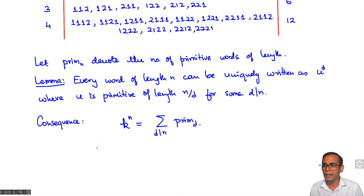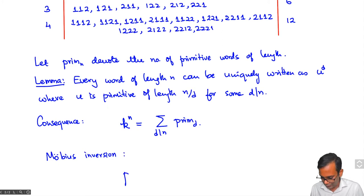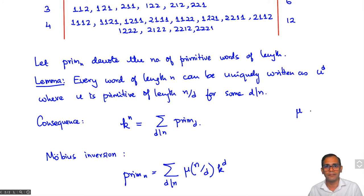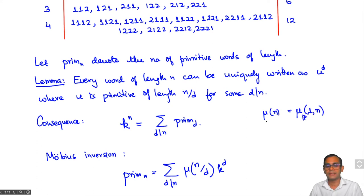Now we can use Möbius inversion. What we get is that prim(n) equals the sum over all d dividing n of the Möbius function mu(n/d) multiplied by k to the power d. Here, mu(n/d) is the classical Möbius function for positive integers under the divisibility partial order, which we have discussed earlier.